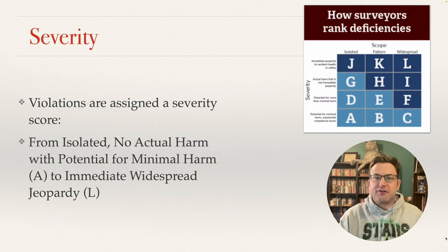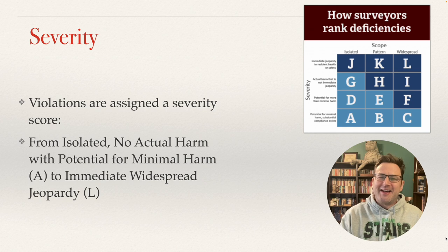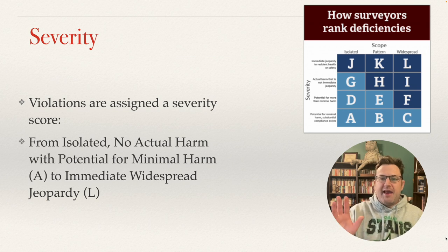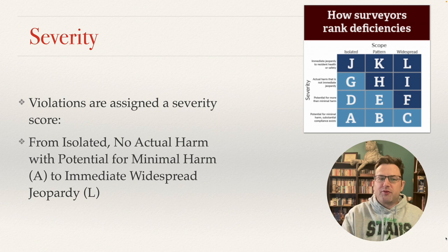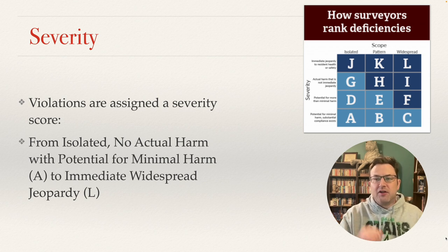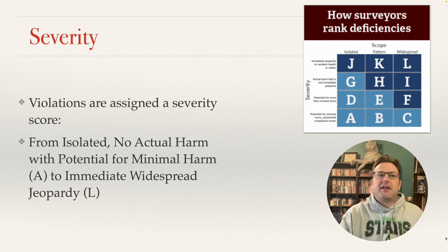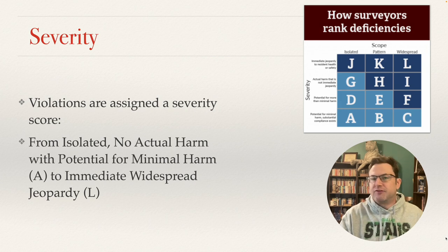F-tags are assigned severity. There is a table ranging from A — an isolated incident where there was possibility of harm but no actual harm found — all the way up to L, which is widespread and immediate jeopardy. If something is qualified as immediate jeopardy, the building is required to take immediate action to solve that problem.